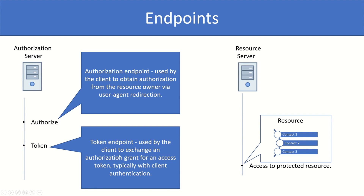You then use this information to send a new request to the token endpoint, where the client exchanges the authorization grant — the same set of information provided to your application — to get an access token. This typically happens with client authentication, meaning you may have to use client ID and client secret depending upon the flow you are using.